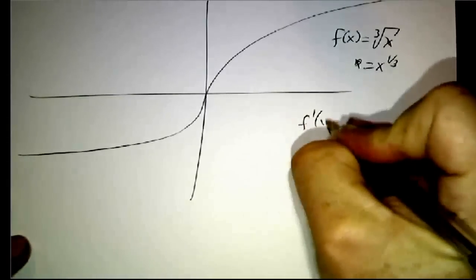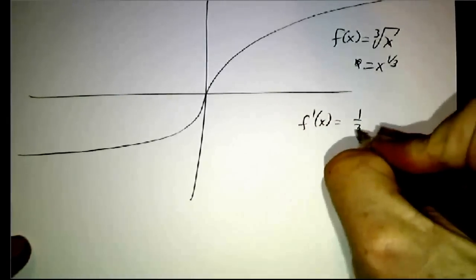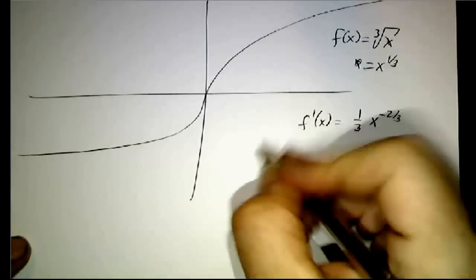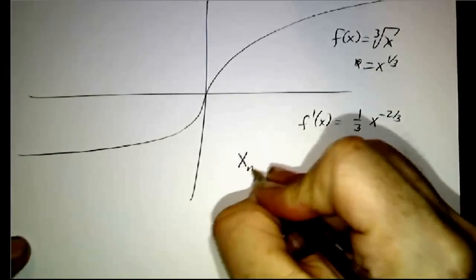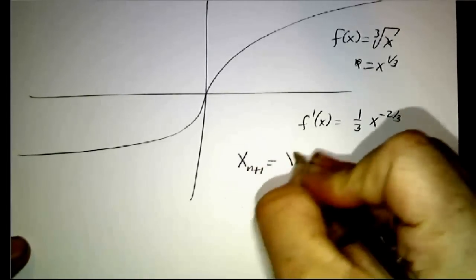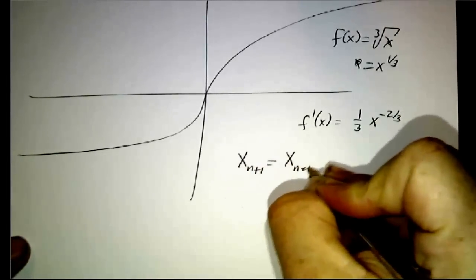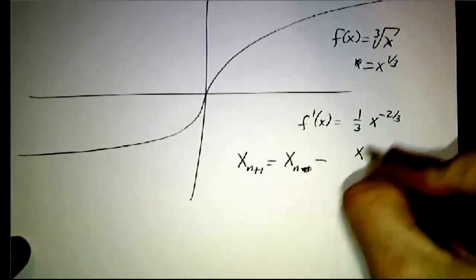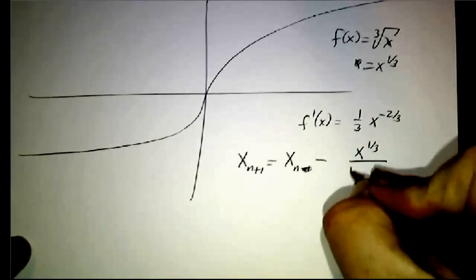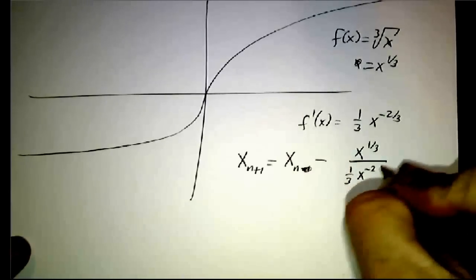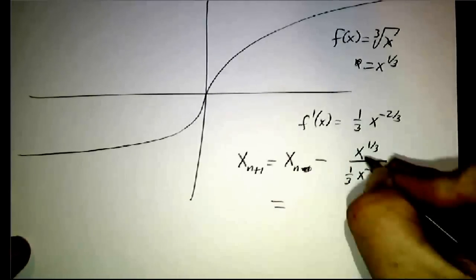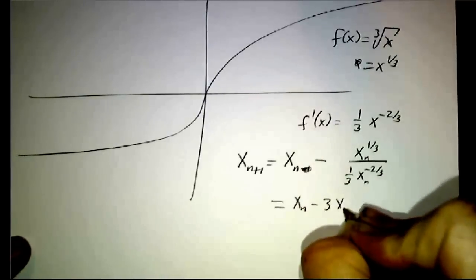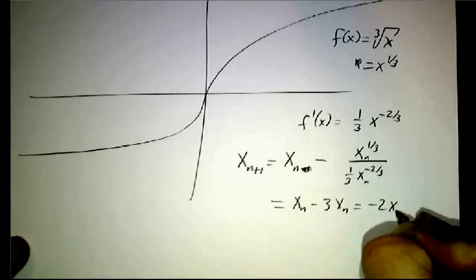See, f' of x is one-third x to the minus two-thirds. And so we get that our next guess is going to be our last guess minus the value divided by one-thirds x to the minus two-thirds. So that's x_n minus 3x_n, which is negative 2x_n.